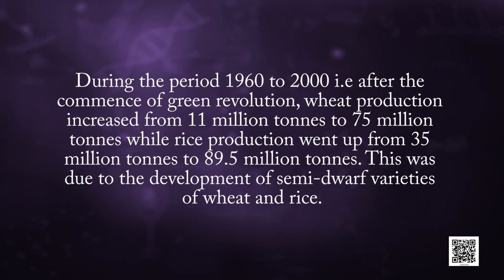Let us discuss some high yielding varieties of wheat, rice, sugarcane and millet. During the period 1960 to 2000, after the commencement of the green revolution, wheat production increased from 11 million tons to 75 million tons, while rice production went up from 35 million tons to 89.5 million tons. This was due to the development of semi-dwarf varieties of wheat and rice.